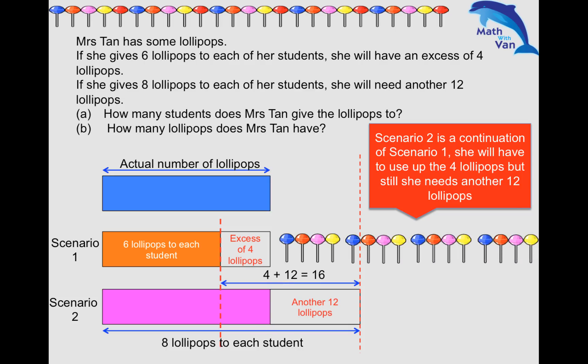So in total she needs four plus twelve, which is sixteen. She needs sixteen more lollipops so that now each student will have eight lollipops instead of six.